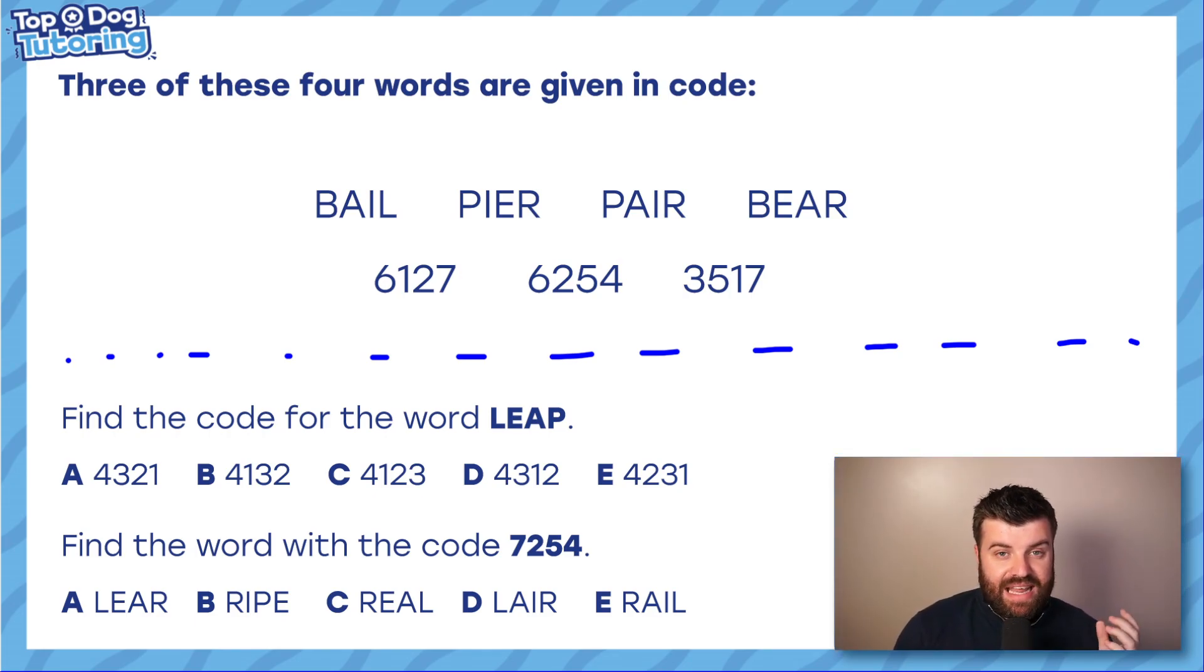So straight away, I noticed something that three of these four words have in common. R, R, R. Three of them end in the letter R. One of them ends in L. So I know that three of my codes end in the same number and one ends in a different number. So looking at these three codes underneath, I have a seven, a four and a seven. Well, I know that four must be the L because it's the only time a four comes up. Whereas the seven comes up twice. So that must be R. So just by looking at the last letter of each word, I've cracked two codes now. So every time I see an R, I'm going to write seven. So in pair and pair and bear, that's fine. But I do know that four is L now. So I'm going to put my L here above bail. I'm going to put a four.